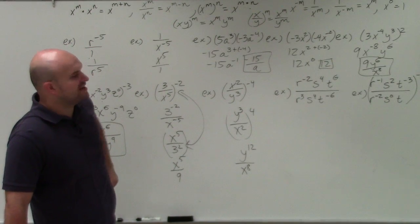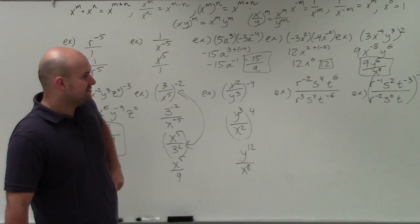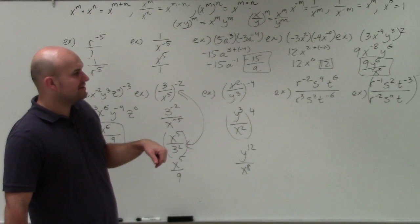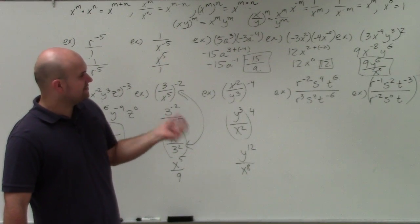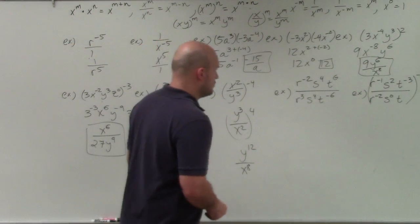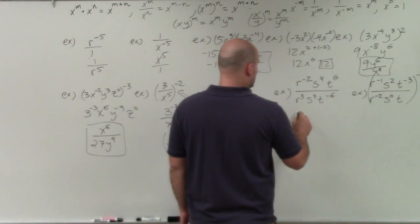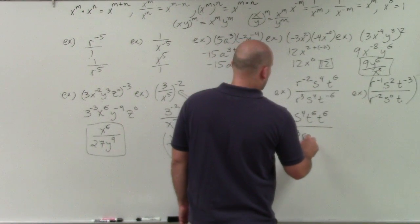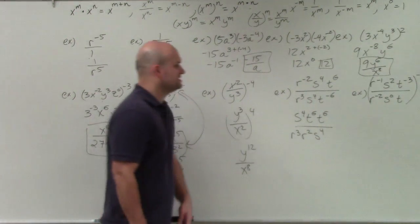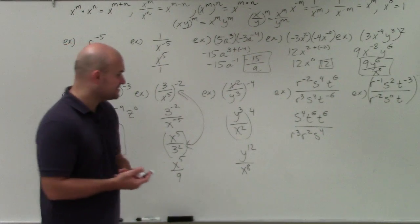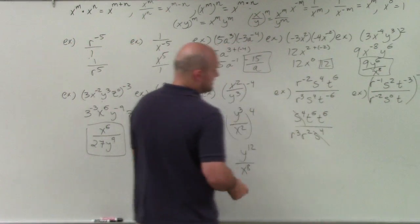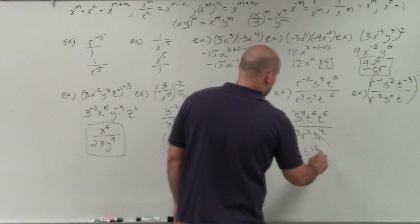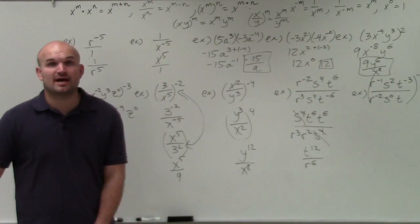Now we have multiple powers with negatives. The basic thing I like to do first is get rid of all the negative powers. Once I've gotten rid of all the negative powers, I'll go ahead and apply the quotient rule. By moving terms — bringing this down and that up — I'm left with s to the 4th, t to the 6th, t to the 6th, r cubed, r squared, s to the 4th. You see how I got rid of all the negatives. Then s to the 4th divided by s to the 4th divides to 1. I then apply the product rule in the numerator and denominator, giving t to the 12th divided by r to the 6th.